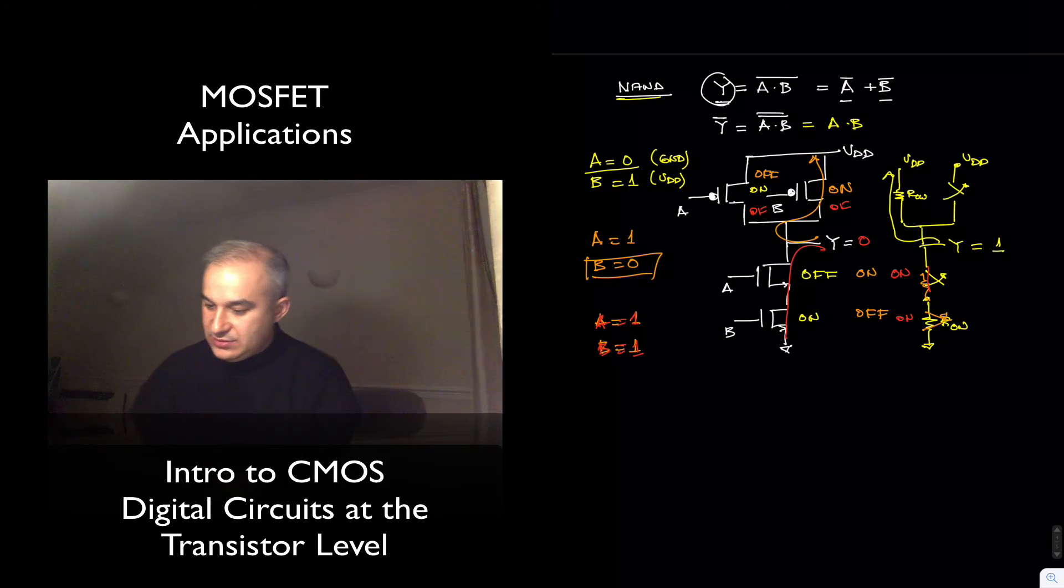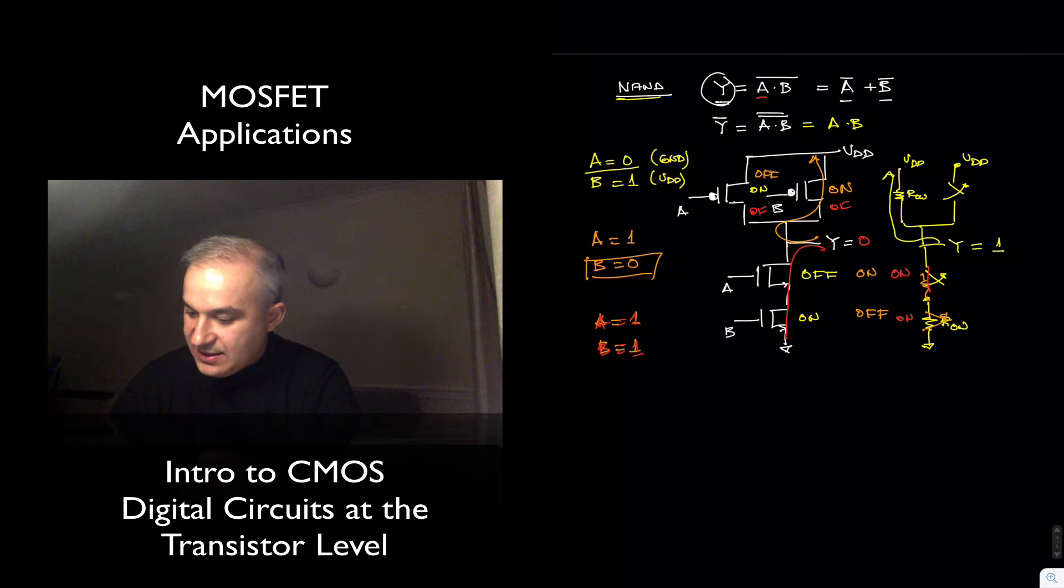As you can see, if A and B are high, the output is going to be low, like a NAND gate. Again, if you wanted to create a NAND gate, you can start with a NAND gate.